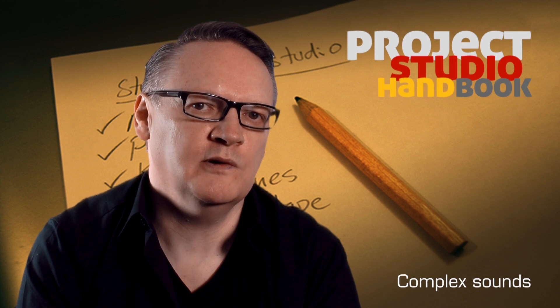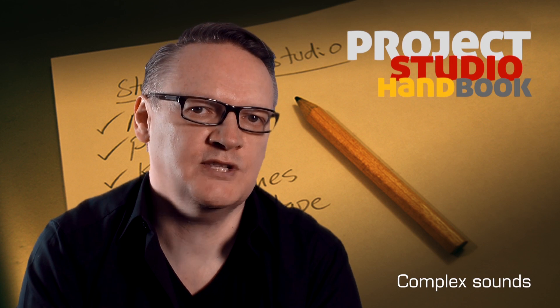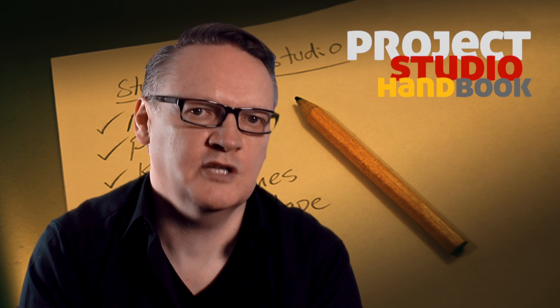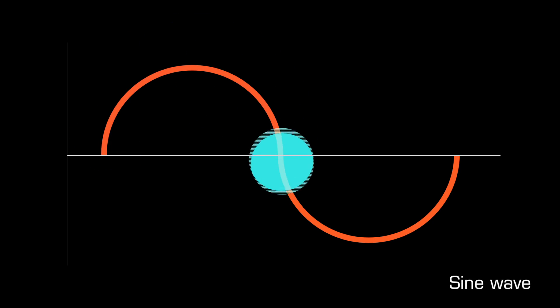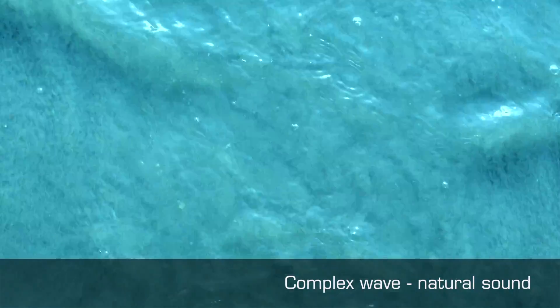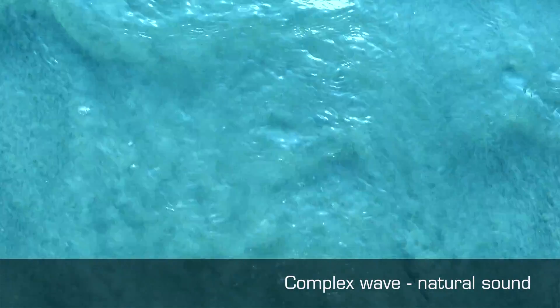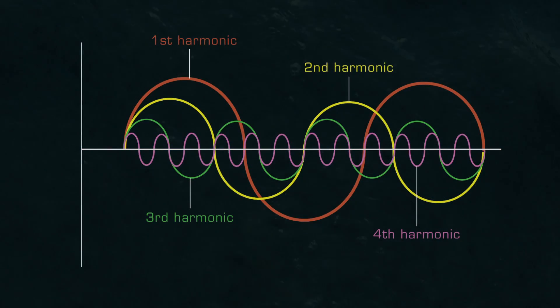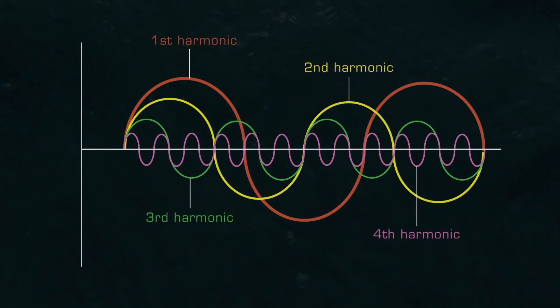Welcome to this tutorial on complex sounds. We have already discussed the simplest sound, a sine wave, created by a source vibrating in simple harmonic motion. But all natural sources vibrate at multiple frequencies simultaneously. Each individual vibration, or sine wave, is known as a harmonic.